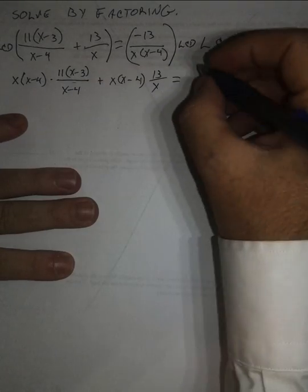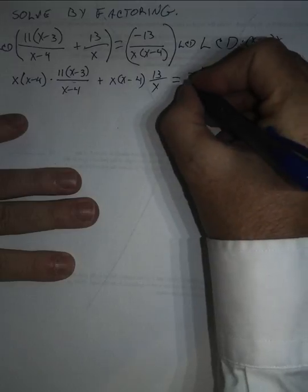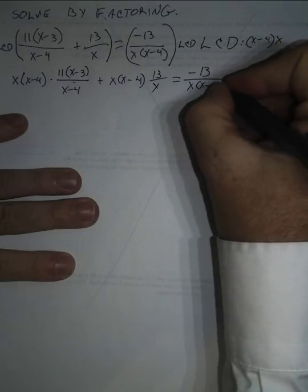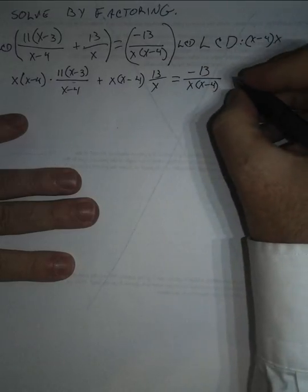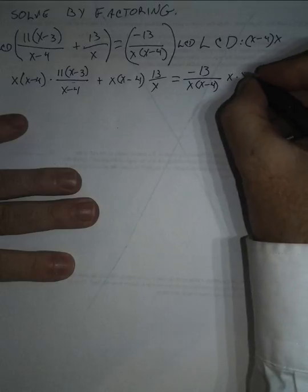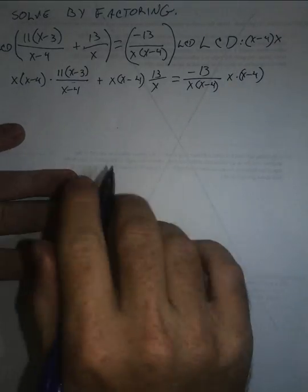And then here I've got negative 13 over x times (x minus 4), again times x times (x minus 4).